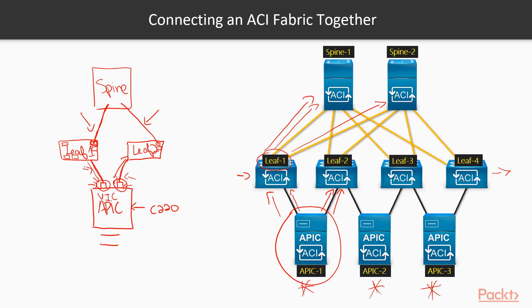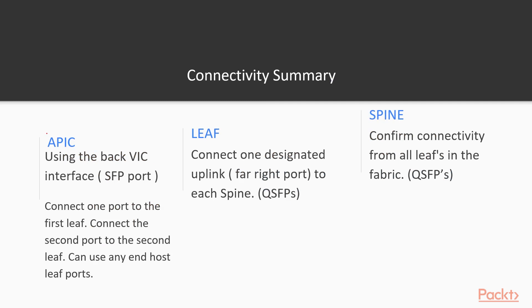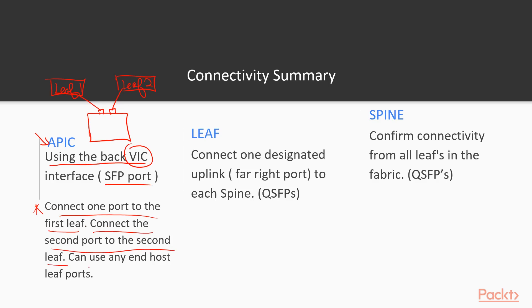To review how to connect the ACI fabric: the APIC uses the back VIC interface with two ports - connect one to leaf one and the other to leaf two. Any end host leaf port can be used to connect the APIC, since it's treated just like any other server. Looking at a leaf, we have all the access ports available, and the uplinks to the spines at the far right.